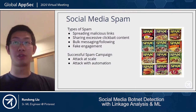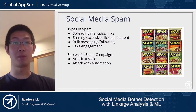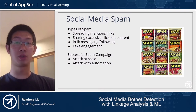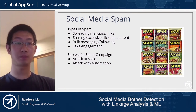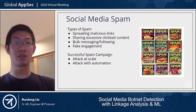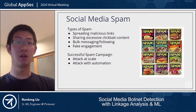We've observed different types of spammy behavior. Spammers intentionally spread malicious links to get malware installations. They share excessive clickbait content to trick users into visiting. Bulk messaging and following is also a spam strategy, since some users can't resist clicking links a stranger provides. Some smart spammers leverage fake engagement to game ranking systems so their content ranks higher in home feeds and gets more distribution. A successful spam campaign usually involves two important factors: attack at scale and attack with automation.